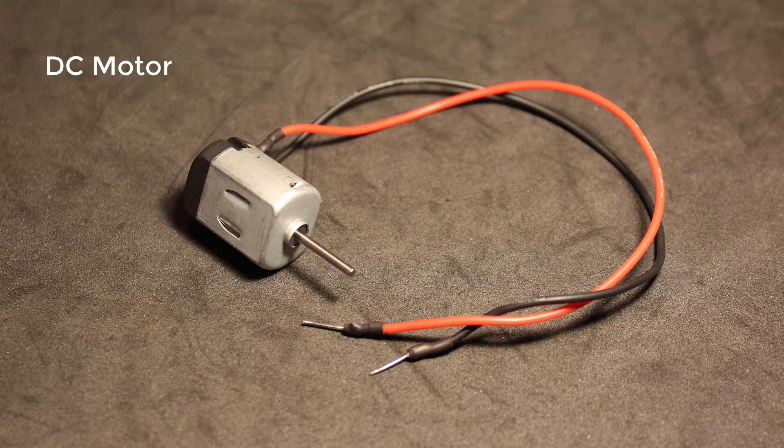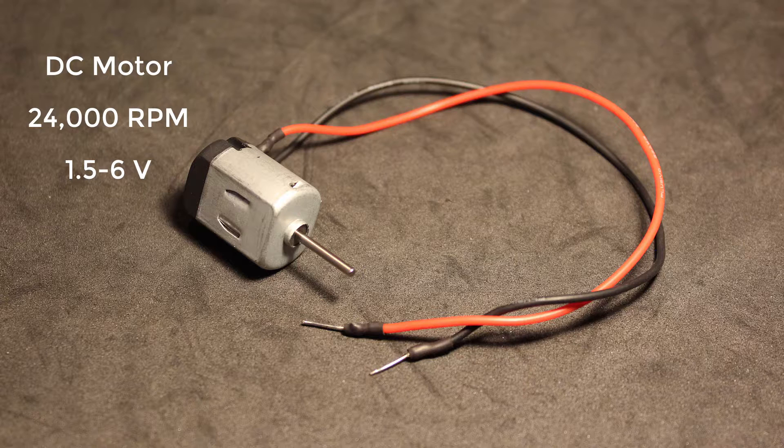We are going to be using a DC motor for the spinning of the fan. You can pretty much use any DC motor for this project. I use one that has an RPM of 24,000 which operates within 1.5 to 6 volts.